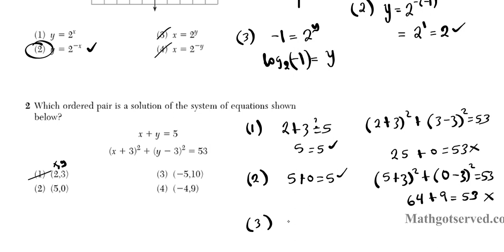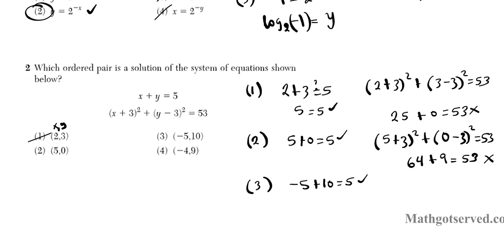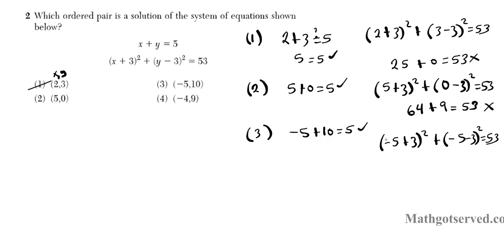Now let's go ahead and try option 3. Is negative 5 plus 10 equals 5? Absolutely. Negative 5 plus 10 is 5. So that checks out. Let's test the second equation. Is negative 5 plus 3 squared plus 10 minus 3 squared equals 53. Is this true or false? Let's work it out. Negative 5 plus 3 is negative 2 squared is 4. For option 3 we're supposed to plug in 10. So let me plug in 10 for my y coordinates. So it's supposed to be negative 5 and 10.